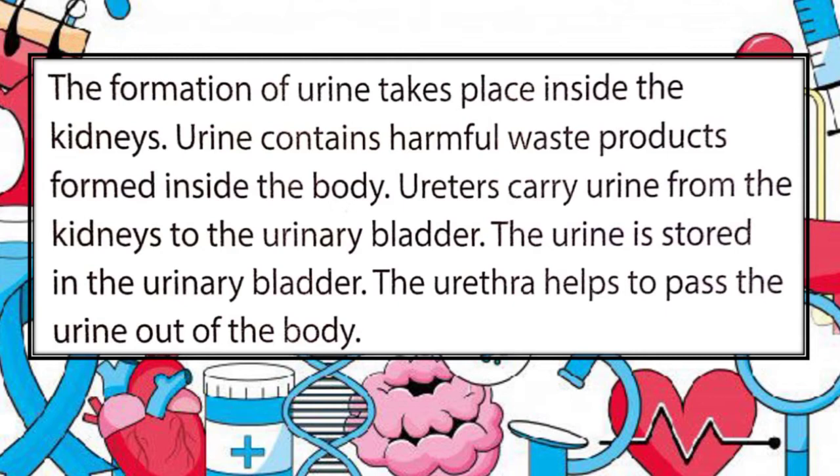Let's understand the ureter. The ureter is a small tube about 25 cm long that carries urine from the kidney to the urinary bladder. It is a muscular tube. Your kidneys make urine by filtering waste and extra water from your blood. The urine travels from the kidney to the bladder through two thin tubes called ureters. The ureters are about 8 to 10 inches long.